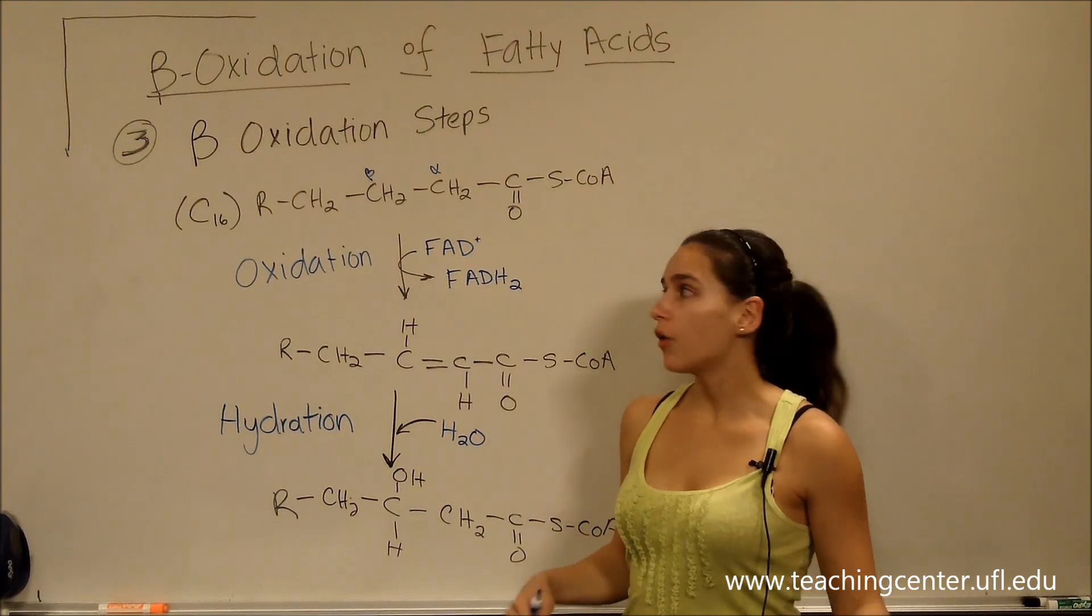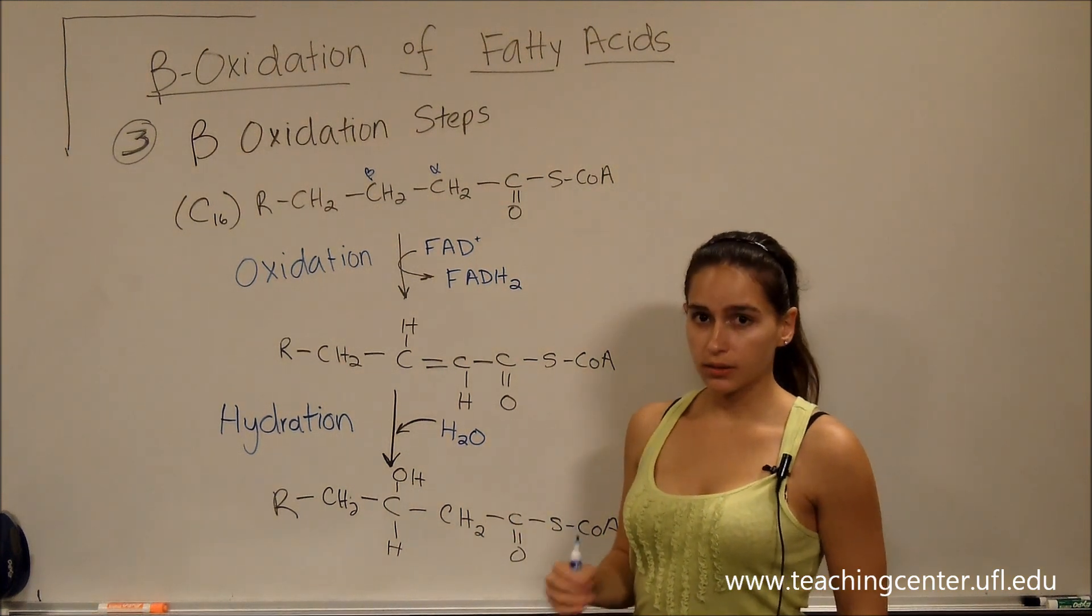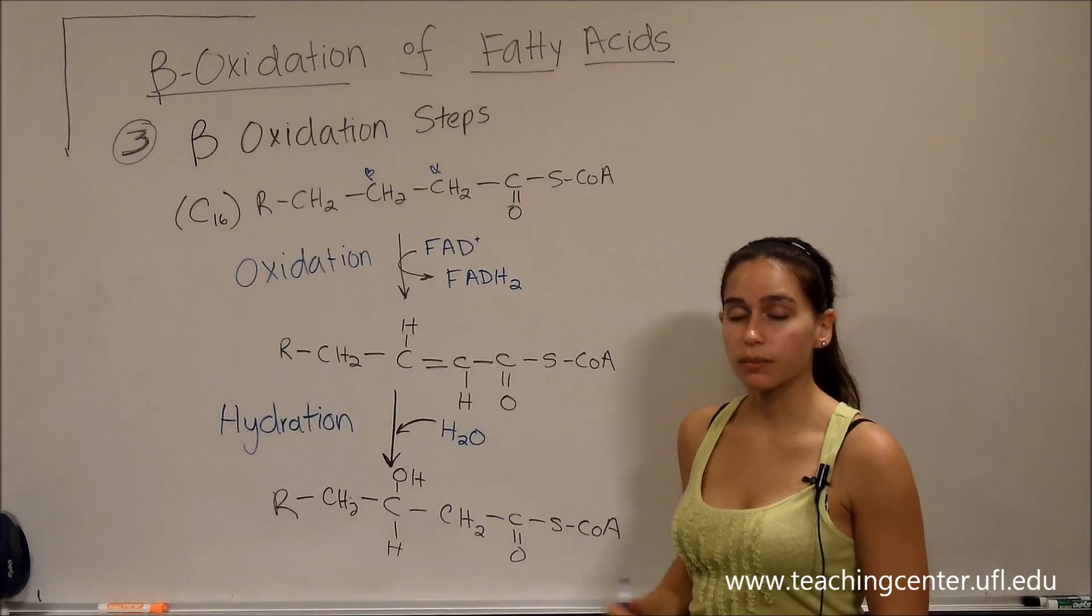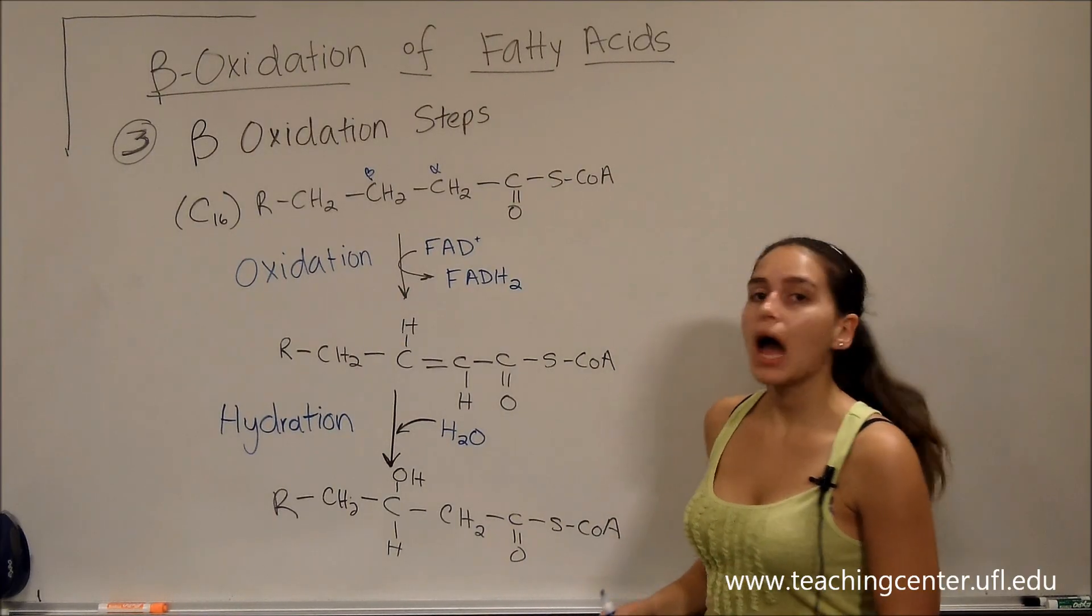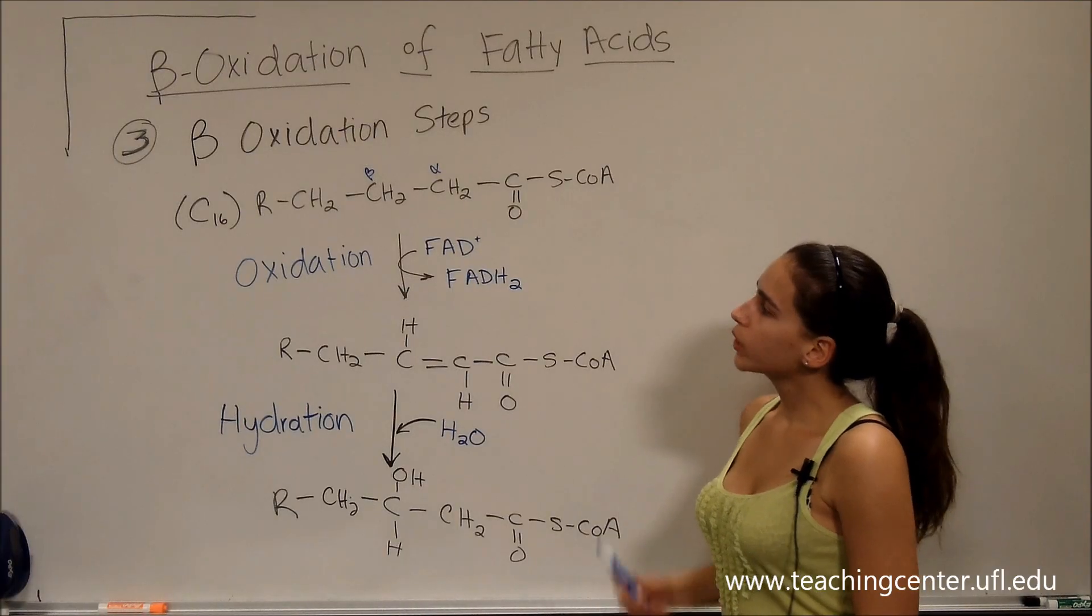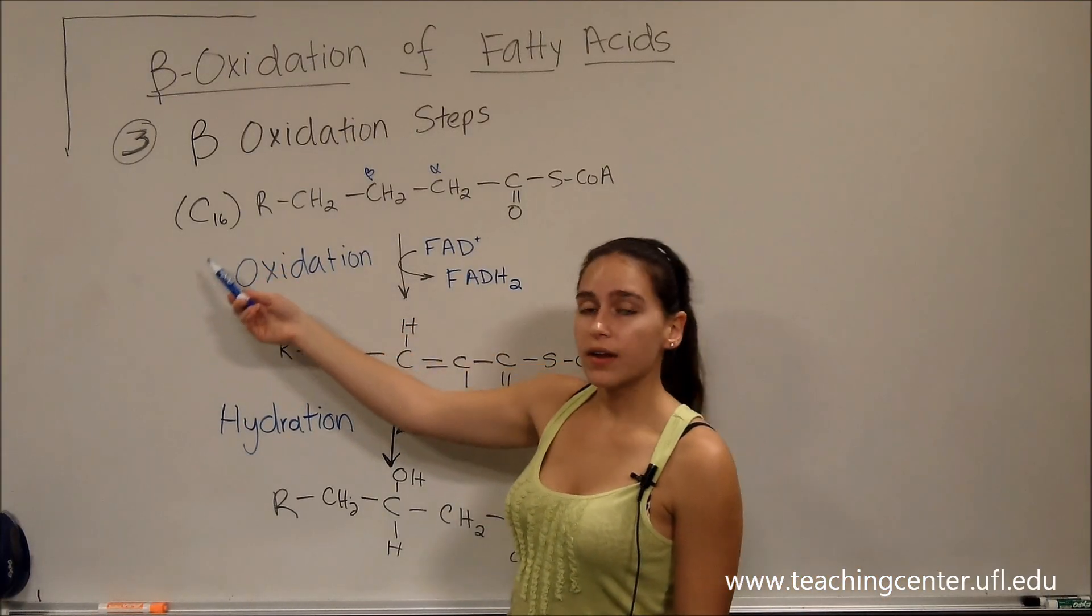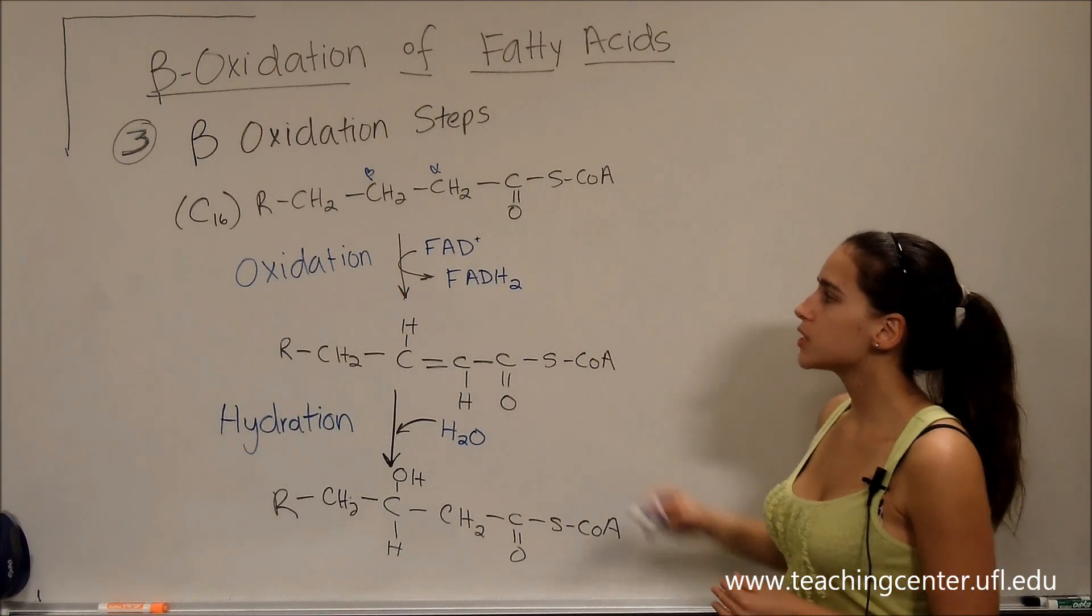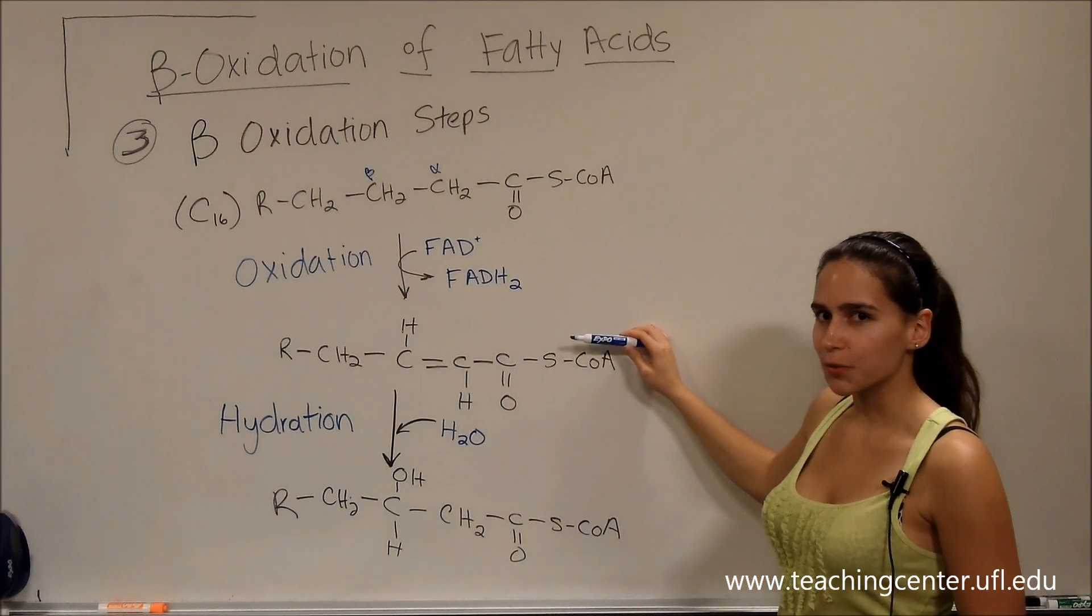So now that we have undergone our activation of the fatty acyl, and we have put our fatty acyl CoA into the mitochondrial matrix, we can now undergo beta oxidation in the matrix. We're going to start with a fatty acid that has 16 carbons. And our first step is going to be oxidation, for beta oxidation.